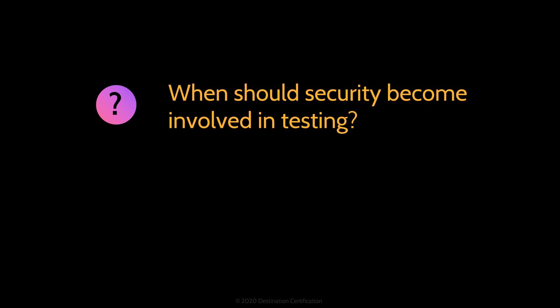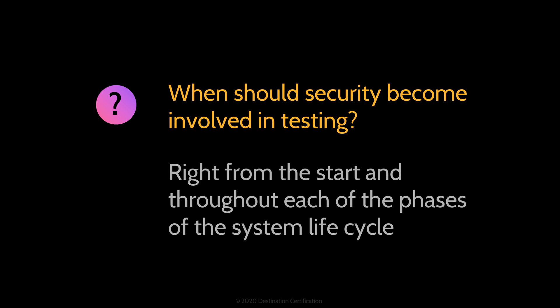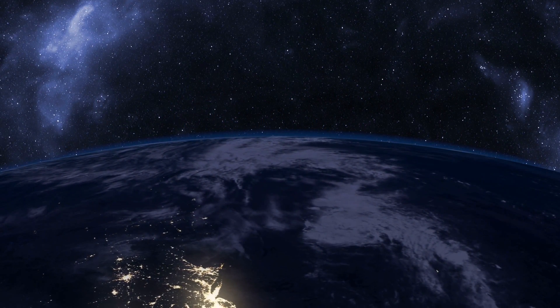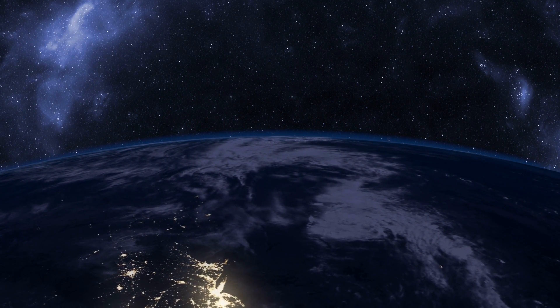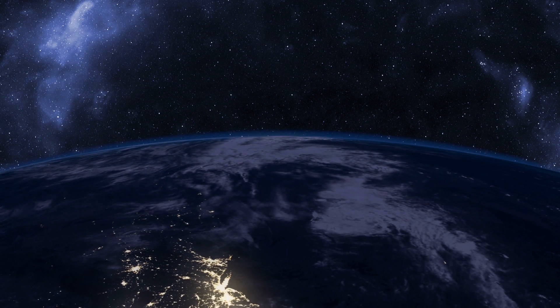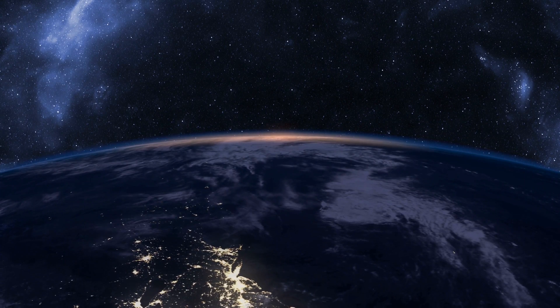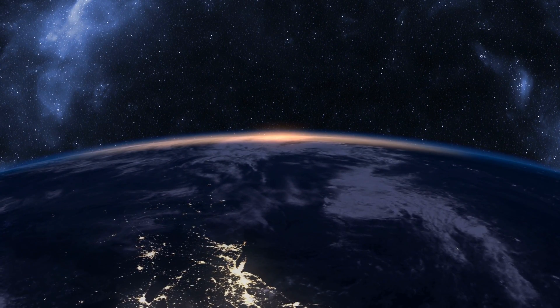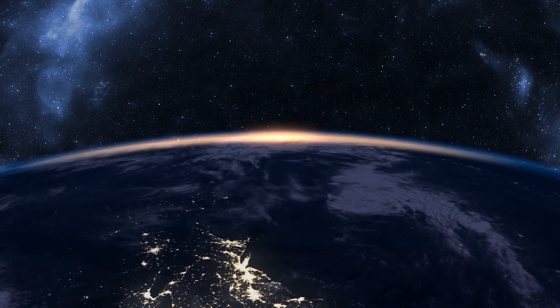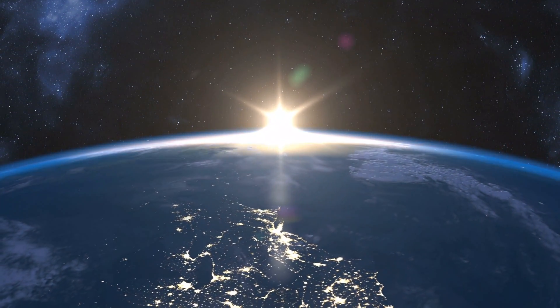When should security become involved in testing? Security assessment and testing covers the gathering and validation of business requirements, definition of controls, development of new applications and systems, the ongoing operation, and the eventual retirement and disposal of systems and data. A good way to summarize this is that testing should be involved right from the start and throughout the entire life cycle of a system. As an exam hint: if you're asked when security should become involved in testing, look for the earliest possible answer. If 'the dawn of time' is an answer, it's probably the right answer.